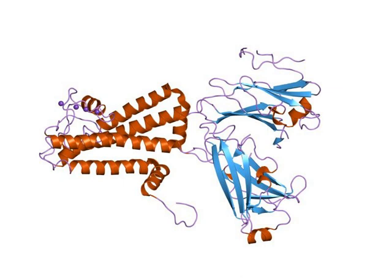At membrane potentials negative to potassium, as seen in Figure 1, when the membrane potential is clamped negative to the channel, at resting potential, e.g. minus 60 millivolts, inward current flows — i.e. positive charge flows into the cell.